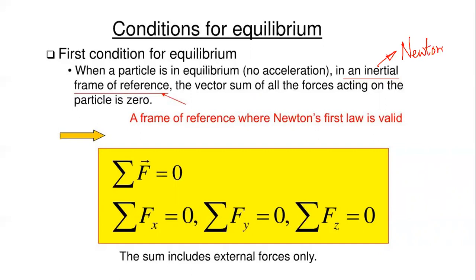There are two types of frames of reference in physics. One is the Newtonian or inertial frame, where inertia concepts from mass times acceleration apply. Another is the non-inertial or accelerating frame. The accelerating frame comes into play in D'Alembert's principle when establishing dynamic equilibrium. In an inertial frame, when a particle is in equilibrium, the vector sum of all forces acting on the particle is zero.